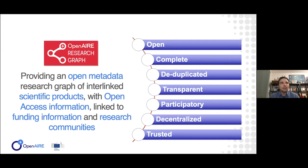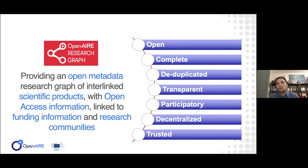You'd be able, for example, accessing the graph to understand if a publication has been funded by a given project from a given funder, or multiple projects from different funders, how these are connected to organizations, who are the authors behind, and how the publication is linked, for example, to a piece of software in GitHub, or to a dataset that is somewhere stored in the network.